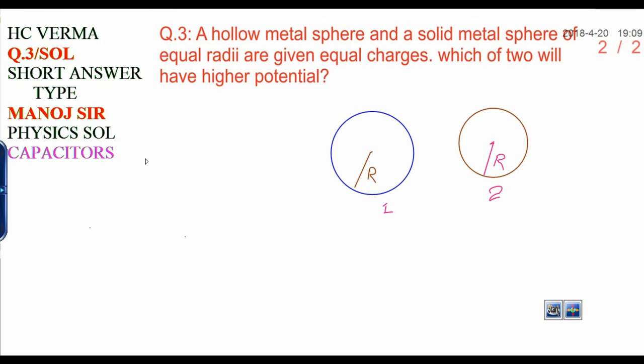The question is: A hollow metal sphere and a solid metal sphere of equal radii are given equal charges. Which of the two will have higher potential?